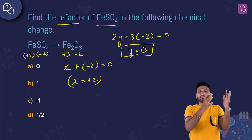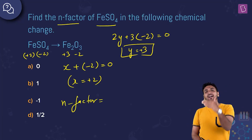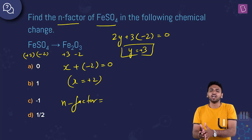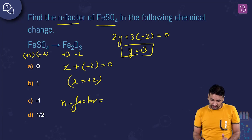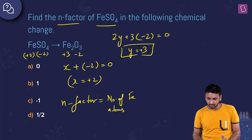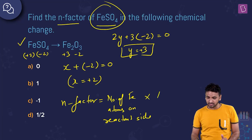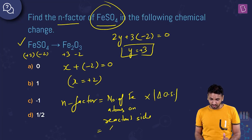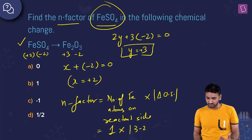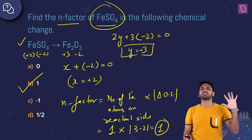The n-factor formula is: n-factor = (number of Fe atoms on the reactant side) × (change in oxidation state). In FeSO4 there is one Fe atom, and the change in oxidation state is 3 − 2 = 1. So n-factor = 1 × 1 = 1. The answer is option B.